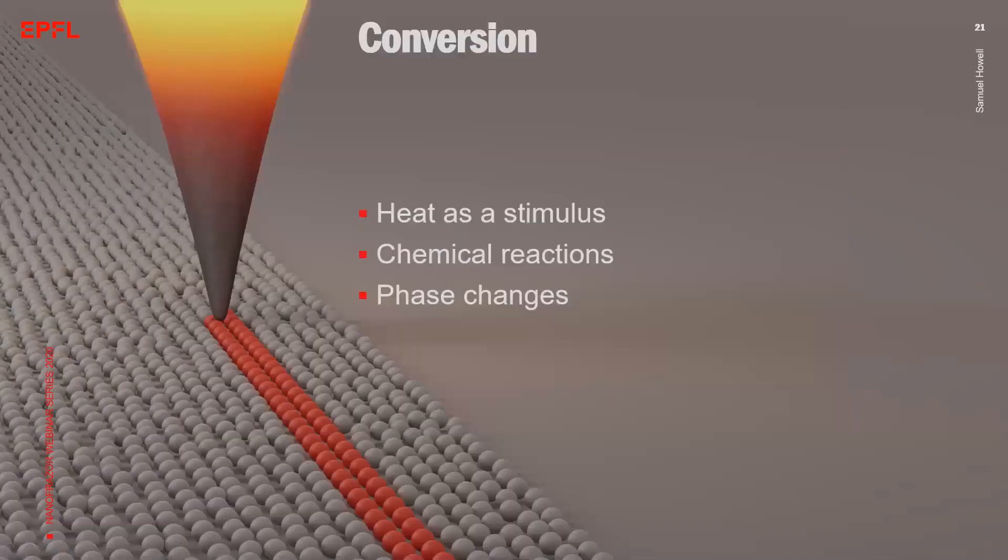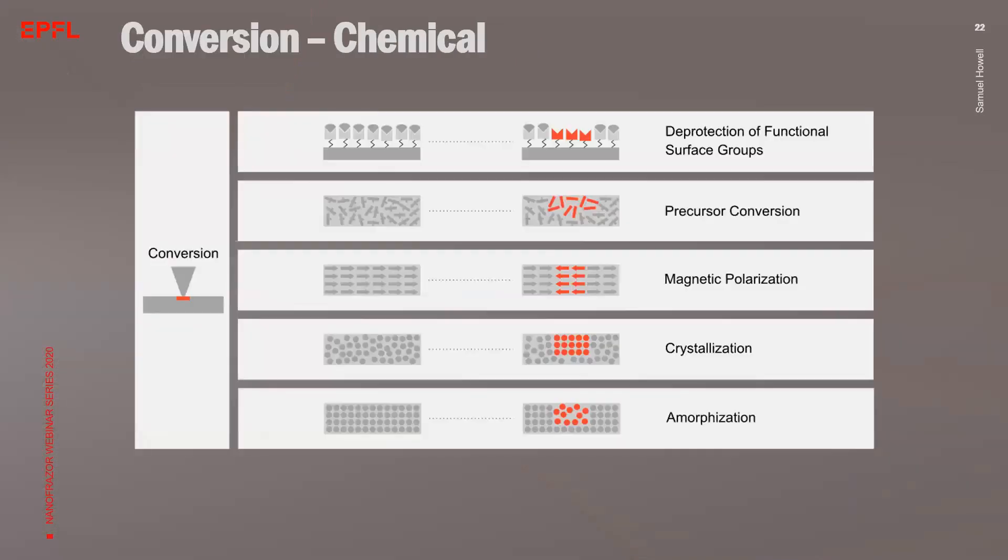Heat can also be used as a stimulus to trigger a chemical reaction or facilitate the movement of atoms to, for example, induce phase changes. In the following, I would like to provide a brief overview of the conversion processes that have been used in literature. First example uses heat to locally deprotect functional groups on the surface of polymers by TSPL. This offers a unique way to selectively modify a sample surface chemistry, for instance, to locally uncover functional groups such as amine or hydroxyl groups. The deprotected groups can then be used to bind nanoparticles, proteins, or enzymes, for example. This technique is particularly interesting for biomedical applications.